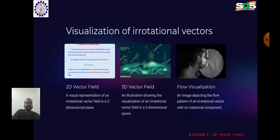In a 3D vector field, you can use arrows to represent the vectors at various points in space. Similar to the 2D case, an irrotational vector field will have arrows pointing in smooth, non-curling patterns throughout the space. Flow visualization: One common method is to release particles into the flow and trace their paths over time.